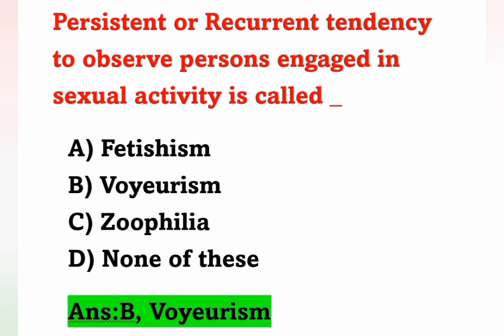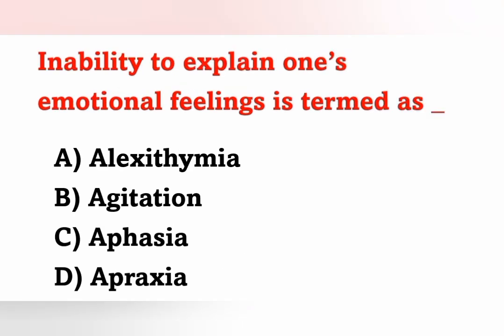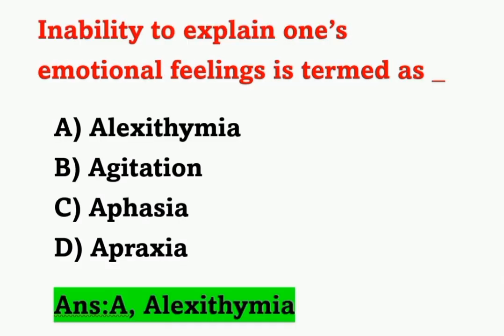Next question: Inability to explain one's own emotional feelings is called what? Options: A) Alexithymia, B) Agitation, C) Aphasia, D) Apraxia. Inability to explain one's own emotional feelings is known as alexithymia. Option A is the correct answer.